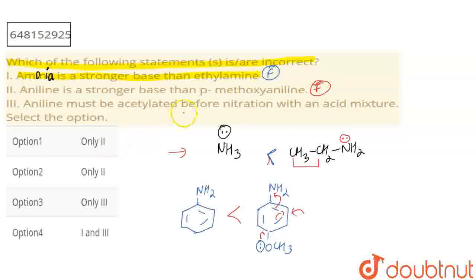Next: aniline must be acylated before nitration with an acid mixture. This is true. Aniline has an NH2 group, which is a highly activating group that will react with the acid HNO3 used in nitration. The NH2 will react with HNO3, so acylation is necessary to protect it. This statement is correct.